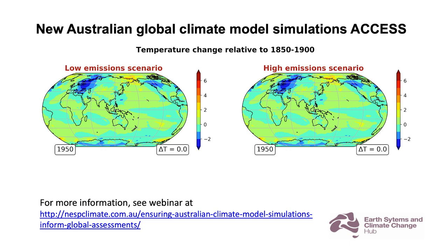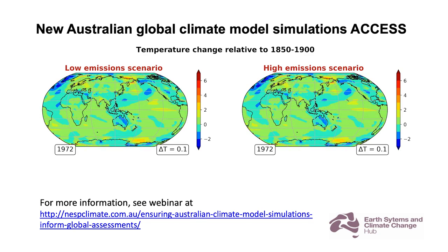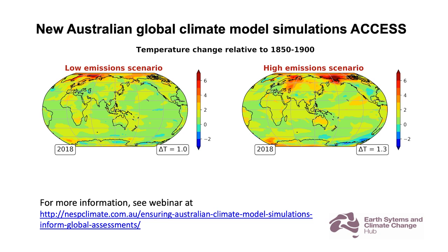What I'm going to show now is an animation of two different types of climate models — high emissions and low emissions. What you see in these animations is temperature varying year by year. Here in 2018 and 2019, the observed temperatures show global warming of about 1.1 degrees relative to pre-industrial. In 2018, the model shows 1 degree in the low emission scenario and 1.3 degrees in the high emission scenario. But the differences here are just year-to-year variability.